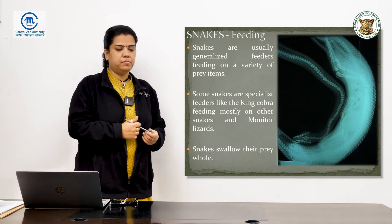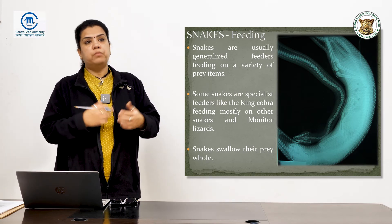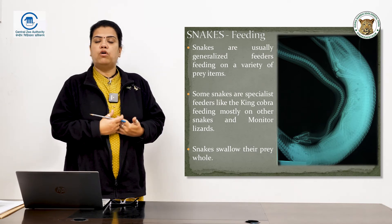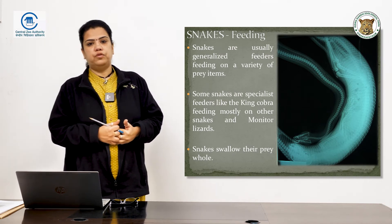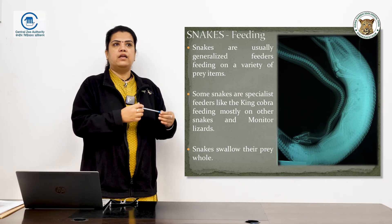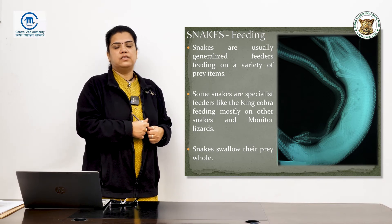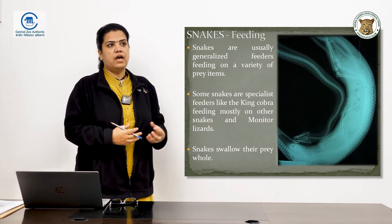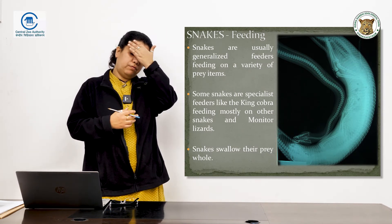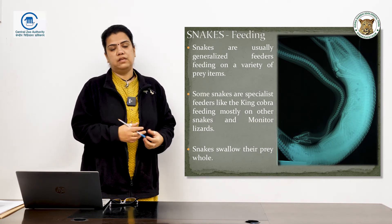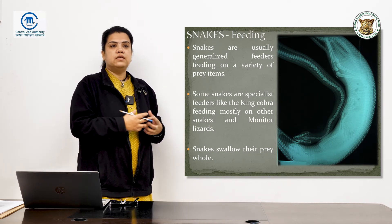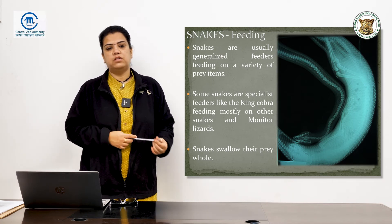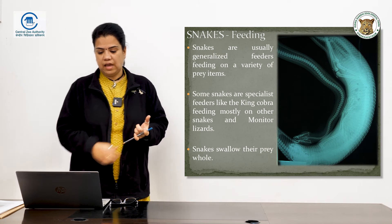There are some very specialized feeders. One of the most well known is the king cobra, Ophiophagus hannah. From the name itself, Ophiophagus means 'snake eater,' so its primary known diet is other snakes. However, in the wild there have been records of these snakes also eating monitor lizards and sometimes even scavenging on them.